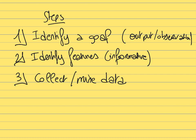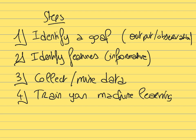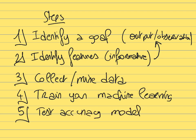Once you have collected observations with associated features, you use that data to train the machine learning model. The model observes the data, infers patterns, and learns to predict the observation from the features. Then you assess accuracy by testing the model on unknown data it has never seen.